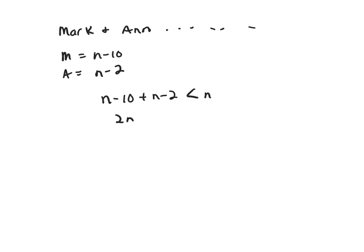And that's 2N minus 12 is less than N. Subtract N from both sides, N minus 12 is less than 0. Add 12 to both sides, N is less than 12.